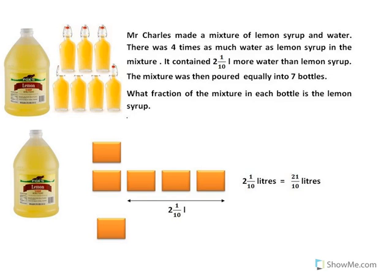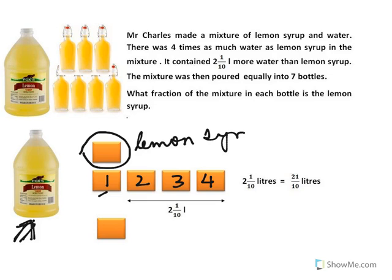Mr. Charles made a mixture of lemon syrup and water and he poured it into this container. Then what was there in that mixture? There was one unit of lemon syrup and four units of water: 1, 2, 3, 4 units of water, because the question says there was four times as much water as lemon syrup in the mixture. This one unit is for lemon syrup and the four units are for water because water was four times as much as the lemon syrup.